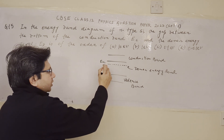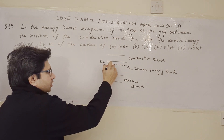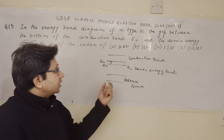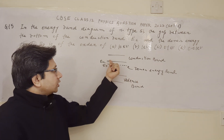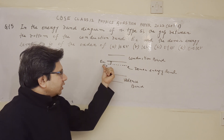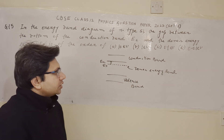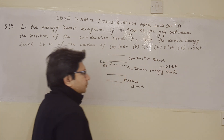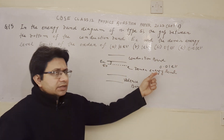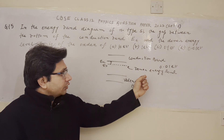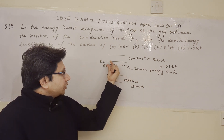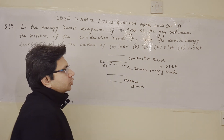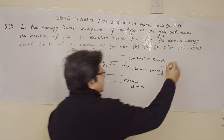The energy difference between the lower level of the conduction band and the donor level is what we have to find. This is a fact-based question — the difference between the lower level of the conduction band and the donor energy level is nearly equal to 0.01 electron volt. So option D is correct.